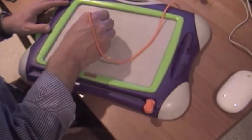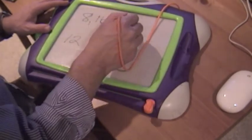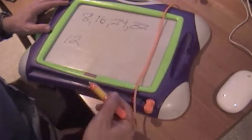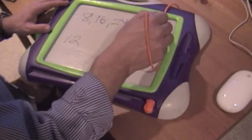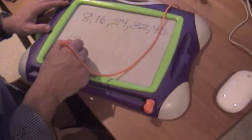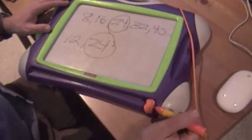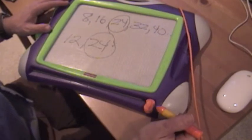Multiples of 8: 8, 16, 24, 32, 40, and I'll just stop there. Multiples of 12: 12, 24, and right there I can see that I have a common multiple of 24.